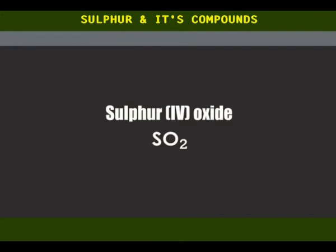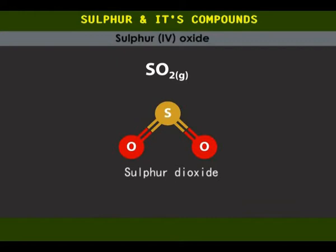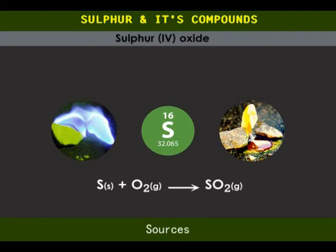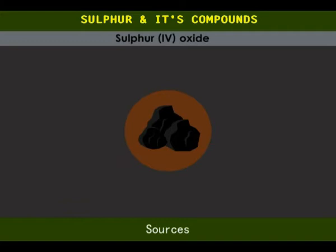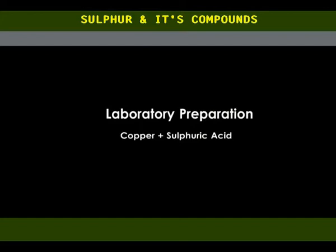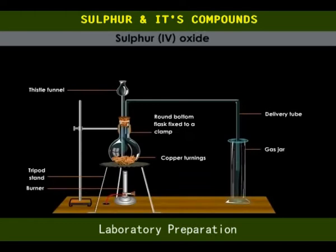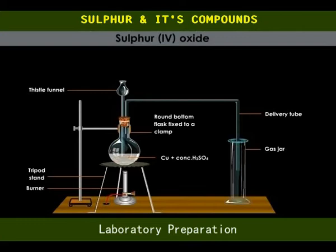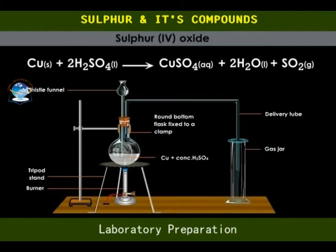Sulfur dioxide (SO₂). Sulfur dioxide is a gas at room temperature. It is formed when sulfur burns in air. The gas is released into the atmosphere when sulfur-containing substances such as coal and oil are burned. In the laboratory, sulfur dioxide is prepared by reacting copper turnings with concentrated sulfuric acid. The copper turnings are placed in a round-bottomed flask, concentrated sulfuric acid is poured in until it covers the copper turnings, the flask is gently heated, and sulfur dioxide is evolved in a continuous stream. Being heavier than air, it is collected by upward displacement of air.